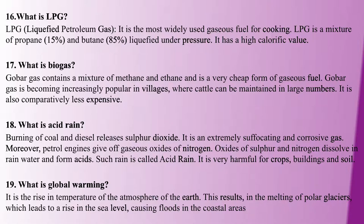Next question: acid rain. When coal and diesel burn, sulfur dioxide is formed. Sulfur dioxide is a suffocating, corrosive, and poisonous gas. Petrol engines produce gaseous oxides of nitrogen. These oxides of sulfur and nitrogen dissolve in rainwater to form acid, causing acid rain.